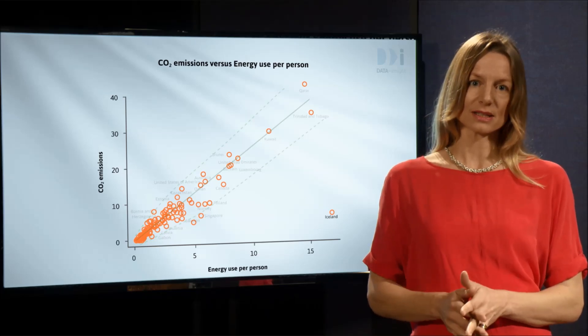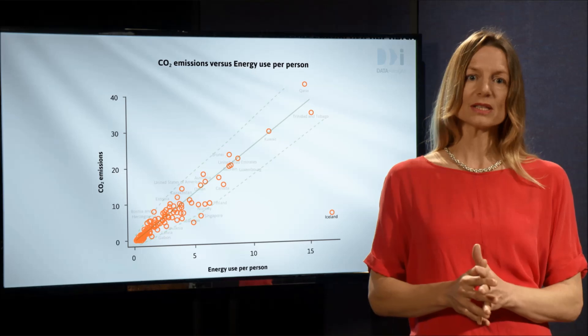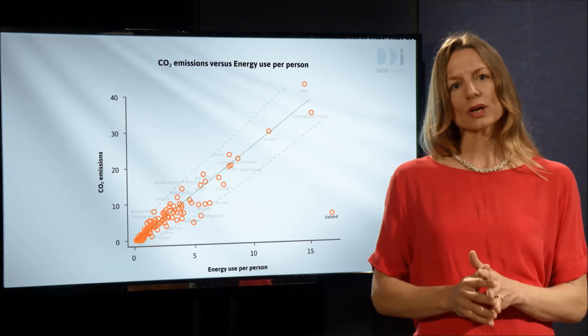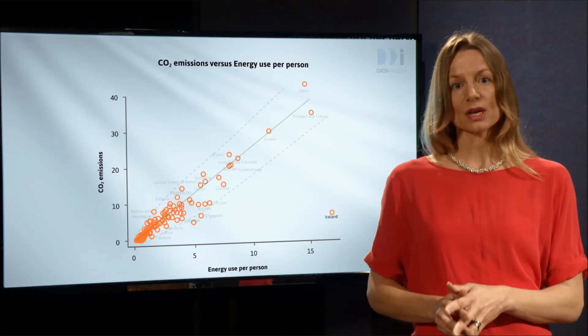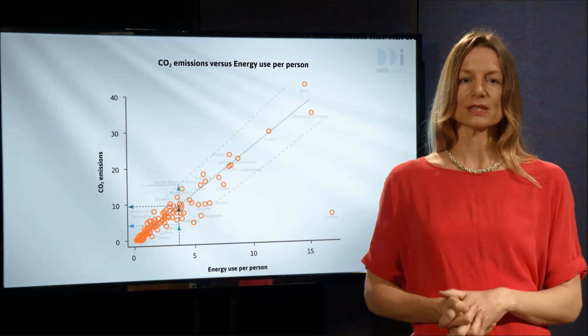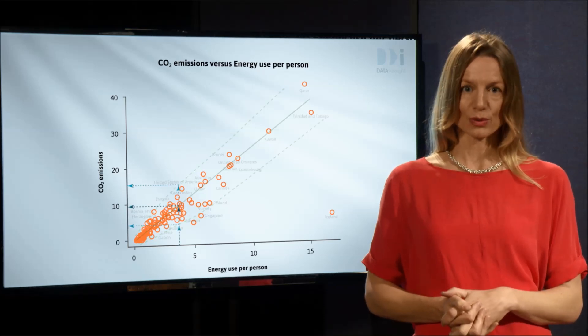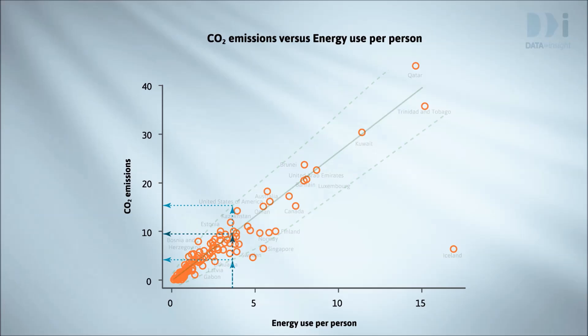Discounting outlying Iceland, the pattern is strong enough that if we knew a country's per-person energy use, we would have a reasonable idea of its likely CO2 emissions. While most scatter plots can be usefully viewed in terms of trend and scatter with the occasional outlier, there are exceptions, such as in the following plots.